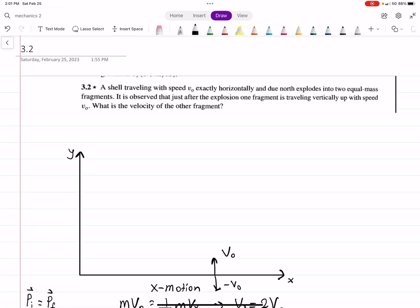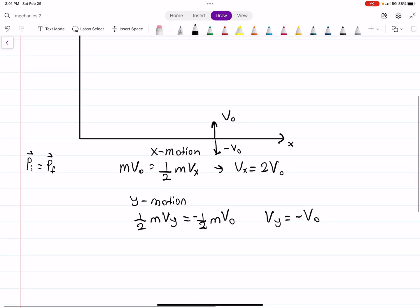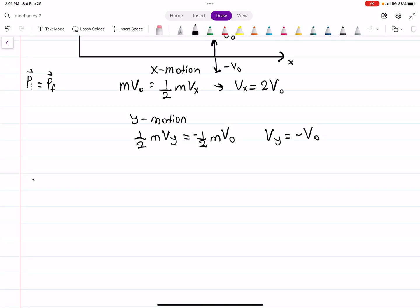To find the velocity of the other fragment, the magnitude is the square root of VX squared plus VY squared, which will be the square root of 2V0 squared plus minus V0 squared.